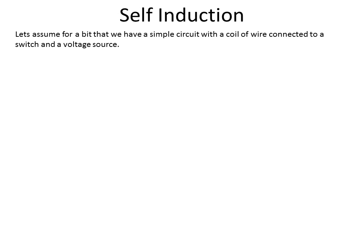Let's assume for a bit that we have a circuit with a coil of wire in it, similar to a solenoid, and a voltage source. We've got our solenoid, that's the coil of wire, a voltage source, and a switch.